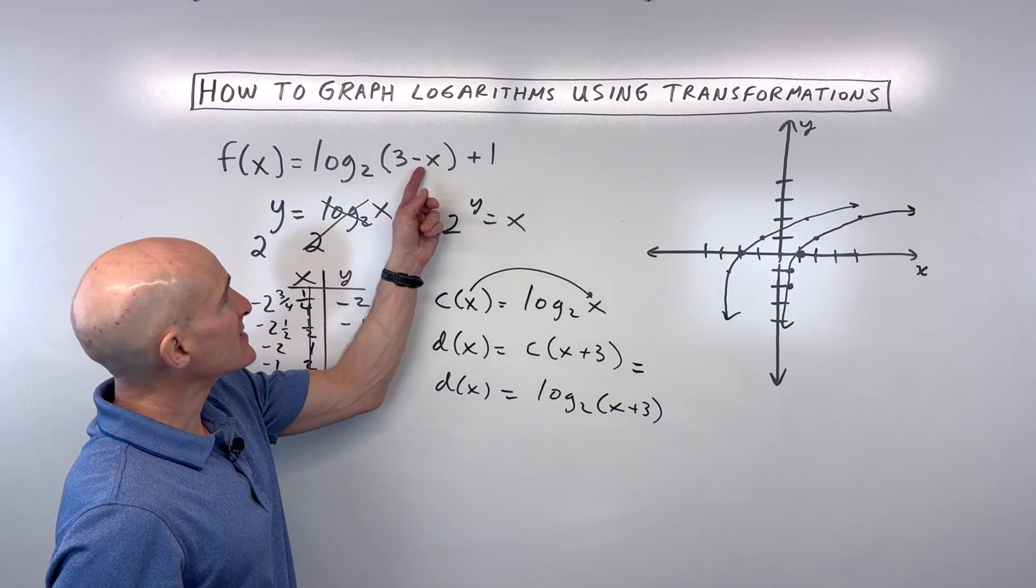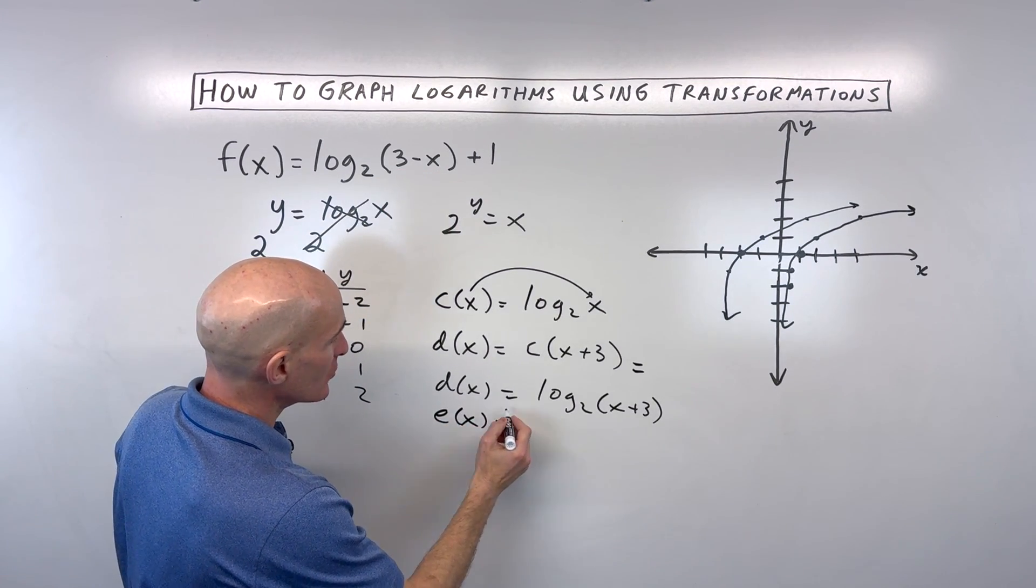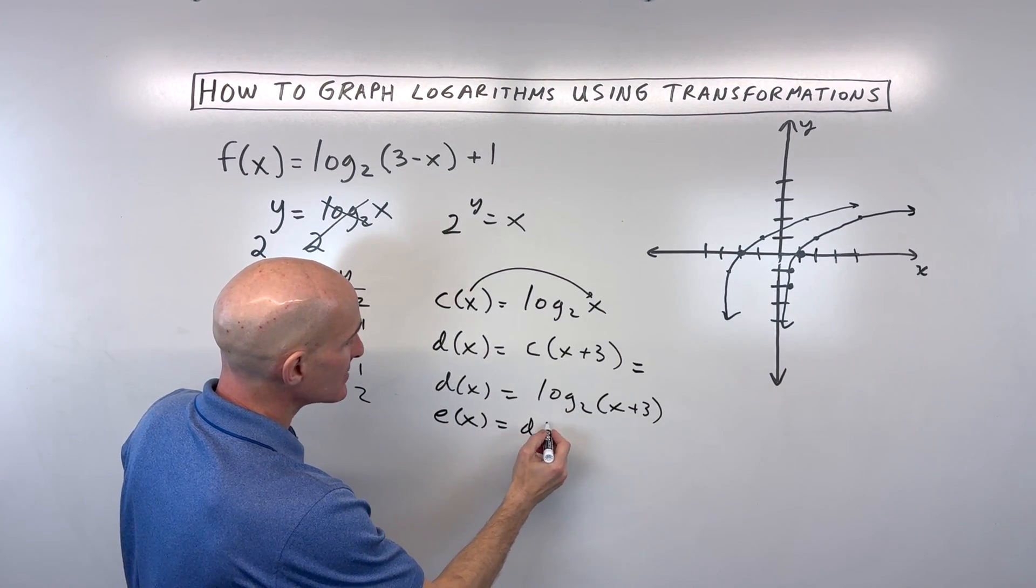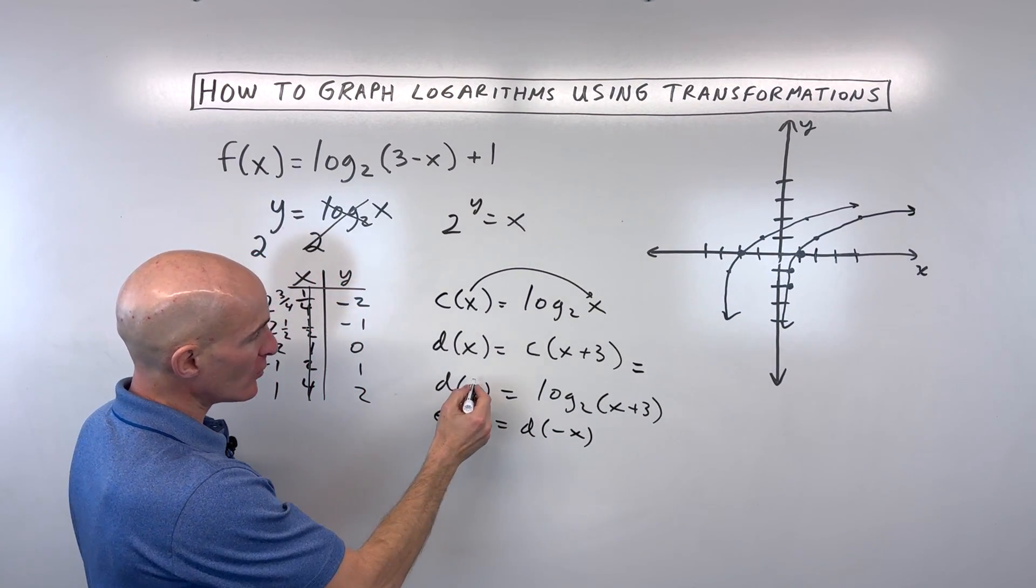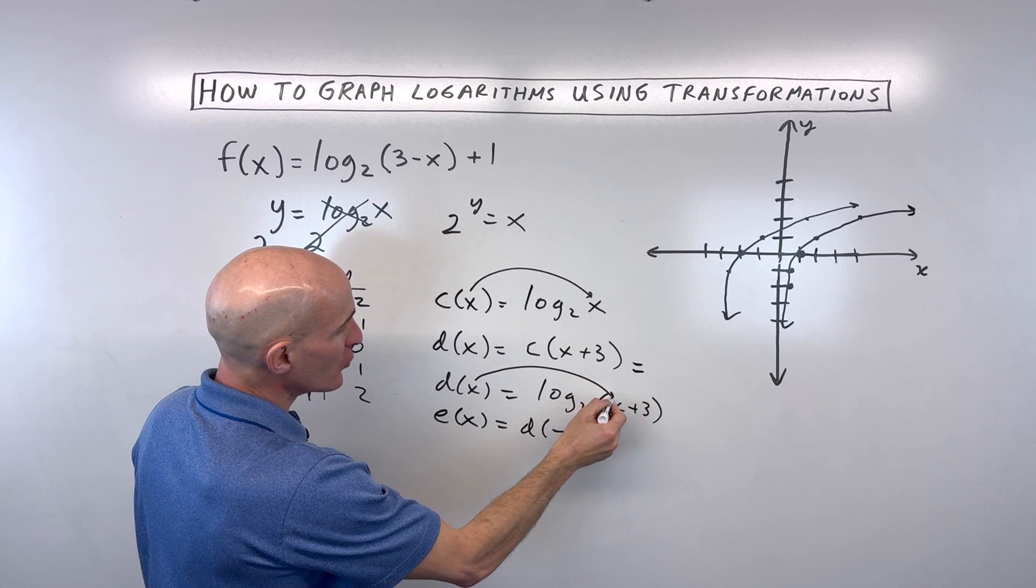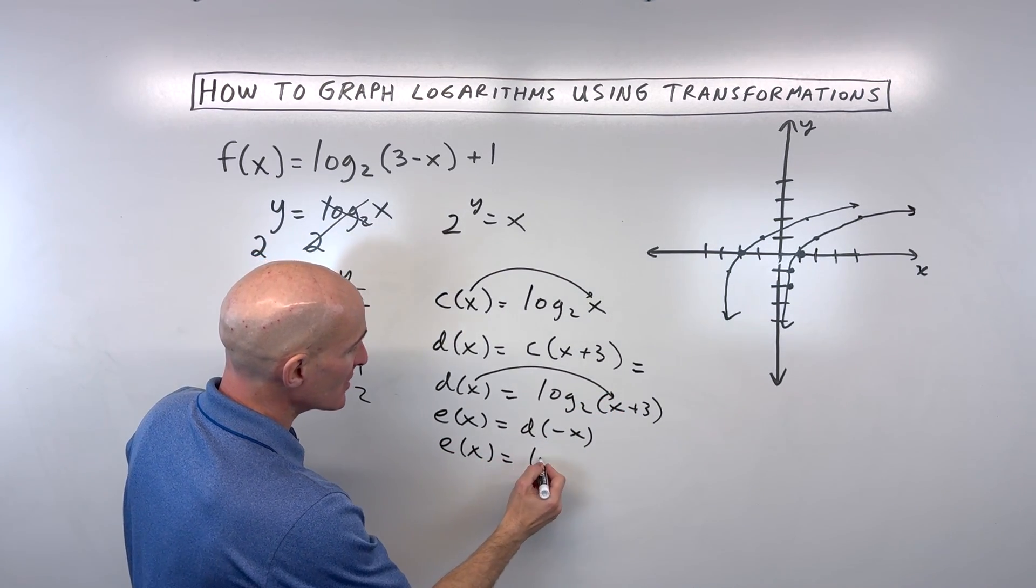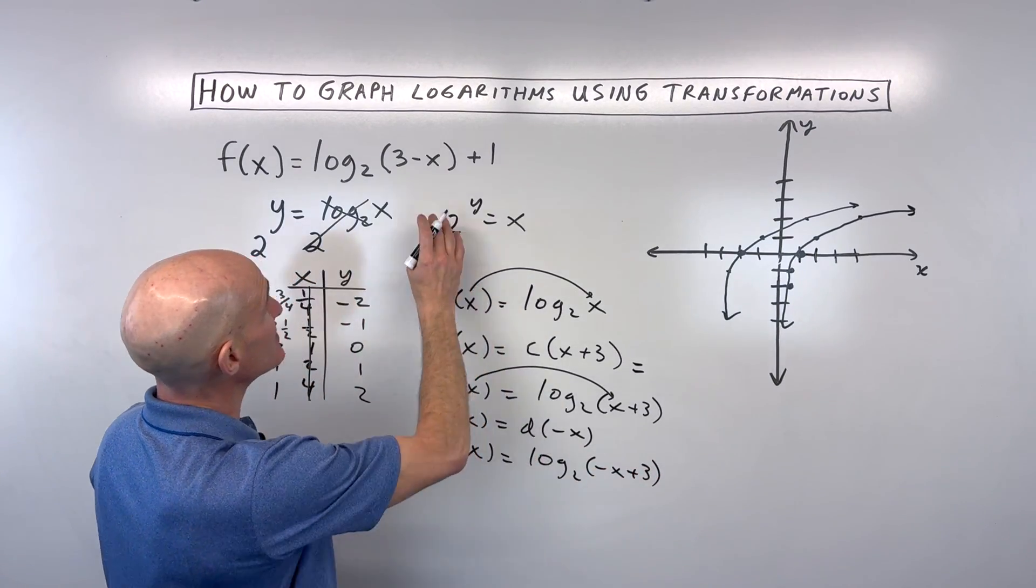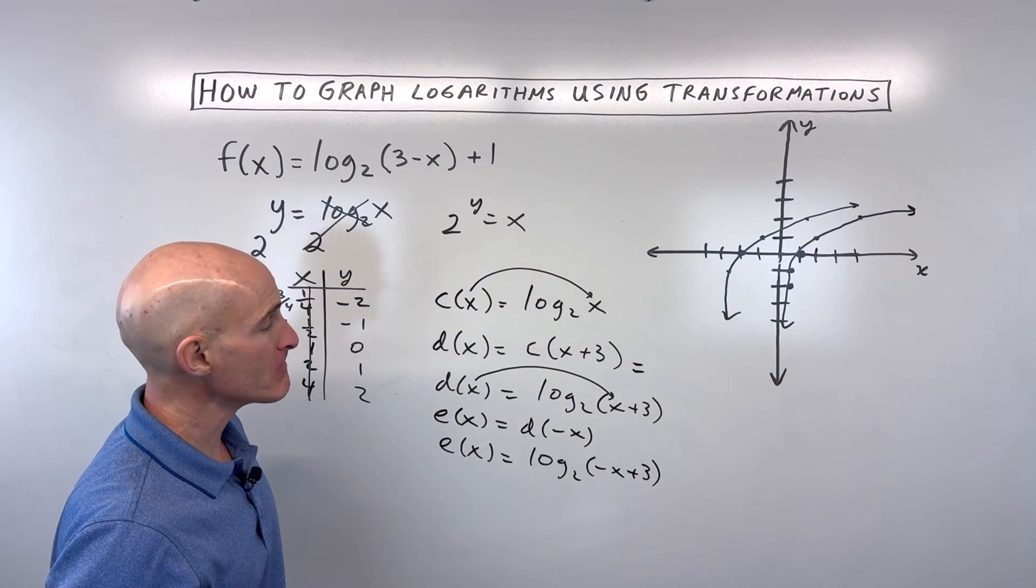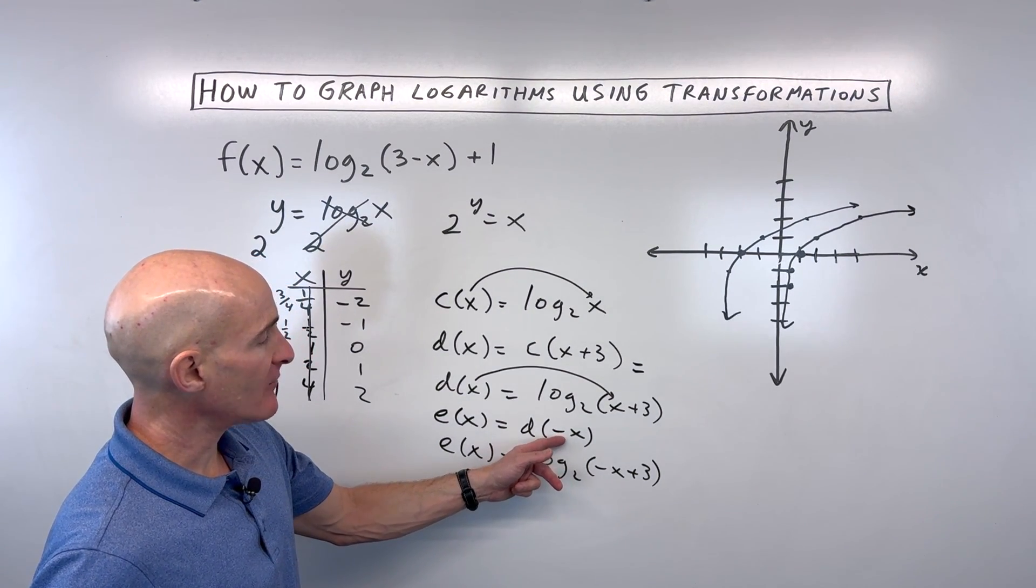Now what we need to do is we need to make this a negative x. So I'm going to make another function here, e of x is equal to this previous function d of negative x. So what does that mean? It means that whatever's in the parentheses is going to go in for x on the right here. So that means that e of x is actually equal to log base 2 of negative x plus 3. That's the same as 3 minus x. So what does this negative x do though?